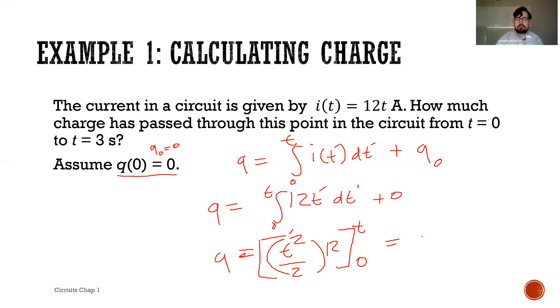Which means our function here just looks like q as a function of time. Let's just clean that up a little bit. Our q as a function of time starts to look like this is just 6t squared.